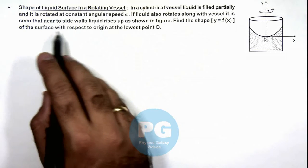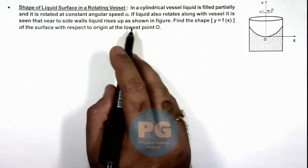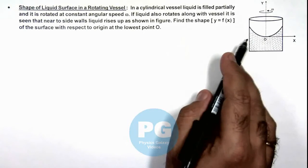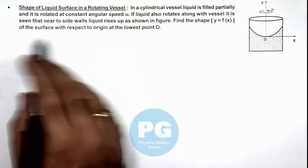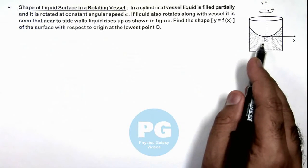It is seen that near the side walls liquid rises up as shown in the figure, and we are required to find the shape y = f(x) of the surface with respect to origin at the lowest point O.